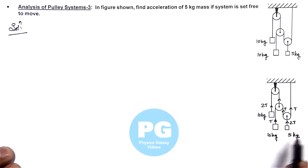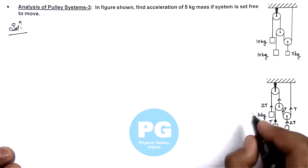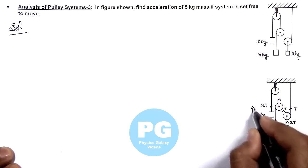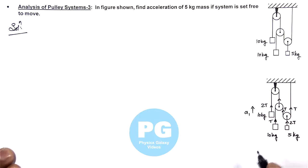Now for the 3 blocks, if we consider this 10 kg block we assume going up with an acceleration a1, this 10 kg is going down with acceleration a2, and say this 5 kg is going up with acceleration a3.